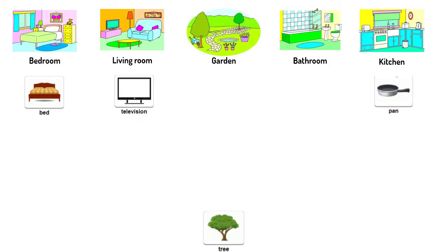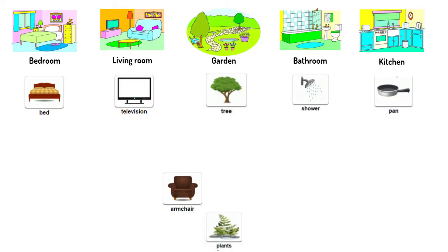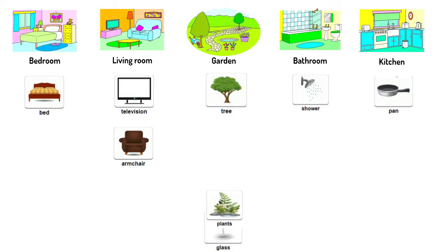And what about tree? You can find a tree in the garden. The next is shower — where can you find a shower? It is in the bathroom. Next is armchair. Where does the armchair go? That's right, it goes to the living room here. And the next picture is plants — where can you find plants? It is in the garden, so it comes here.